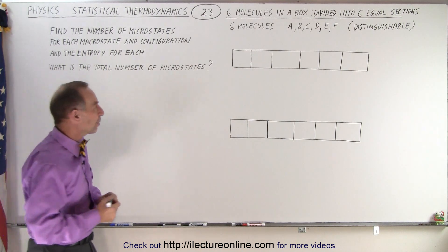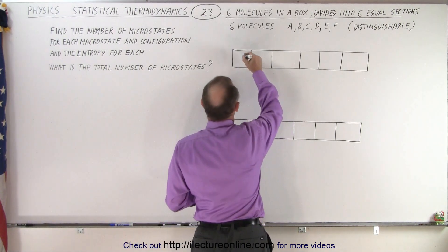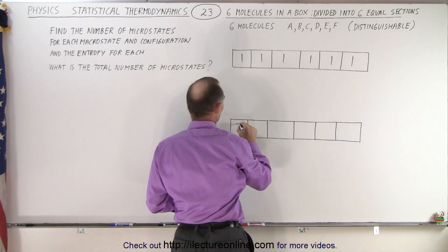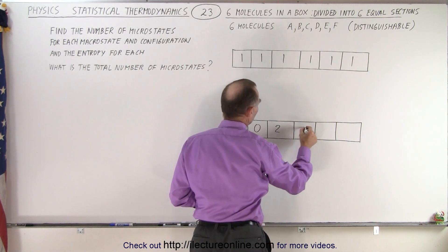So let's put up a few examples. Let's try this one. Let's put a molecule in each of the partitions in the box and then maybe we'll have a situation like this where we go 2, 0, 2, 0, 2, 0.